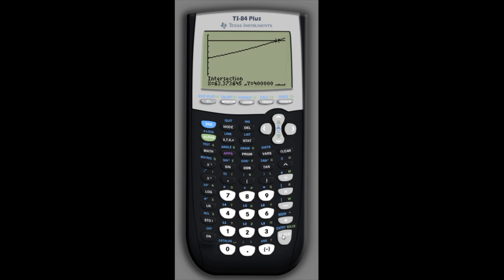And we find the intersection is when x equals 63.37 or about 63.4. So after about 63.4 years, the population will reach 400,000. That's what our model predicts. So that's about the year 2076, according to our model.